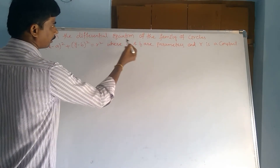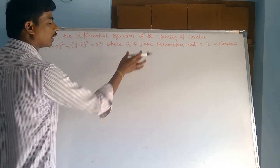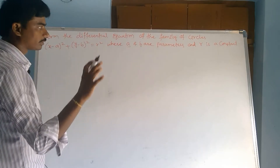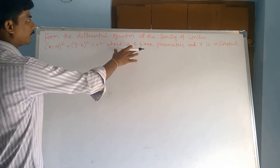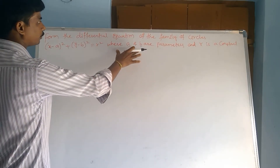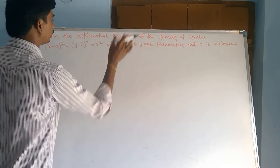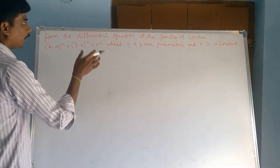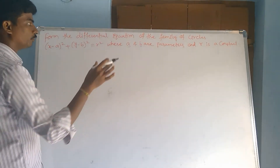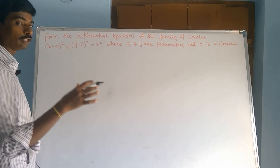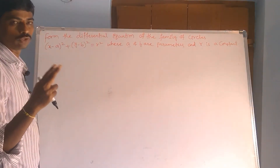Small a and b are parameters here — these two are arbitrary constants. As mentioned in the given question, a and b are parameters — two parameters. So we are differentiating with respect to x two times.